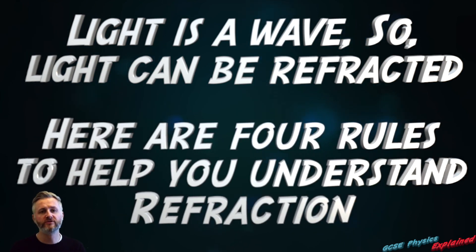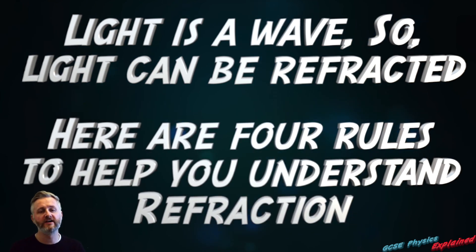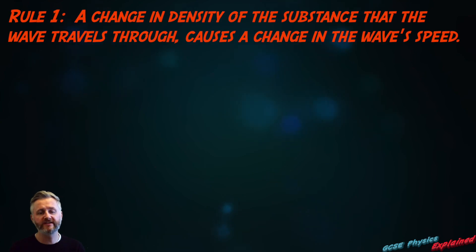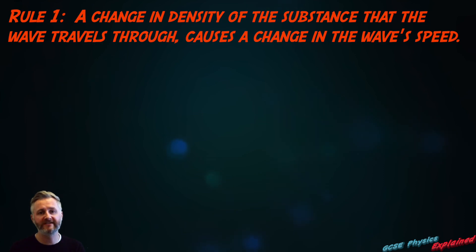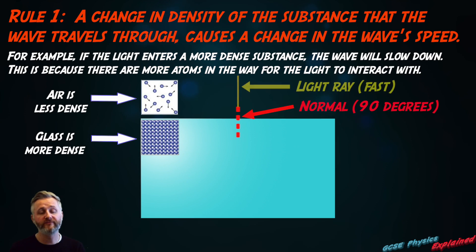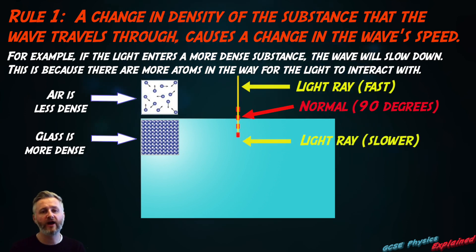Here are four rules to help you understand refraction. Rule one: the change in density of the substance that the wave travels through causes a change in the wave's speed. For example, if the wave enters a more dense substance, the wave will slow down. This is because there are more atoms in the way for the light to interact with.